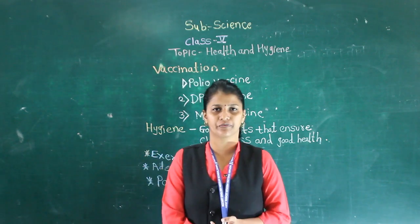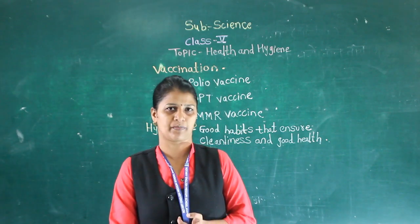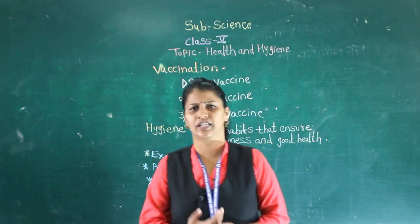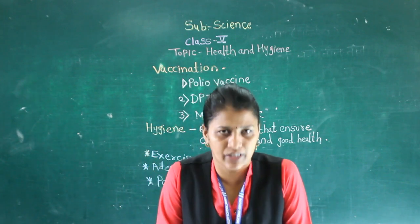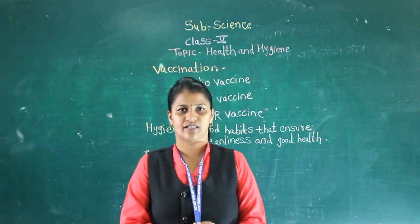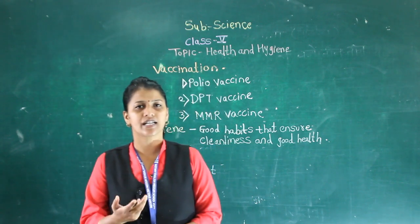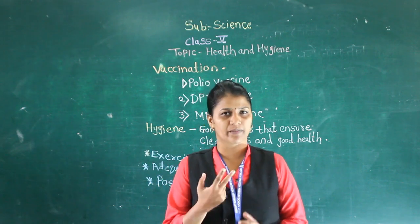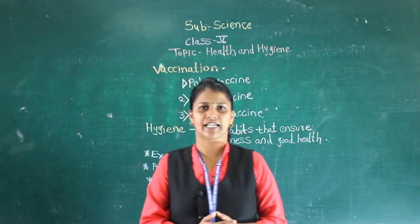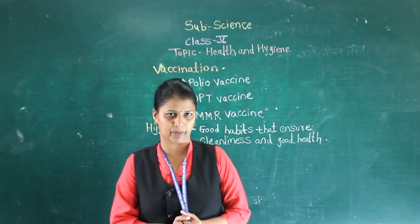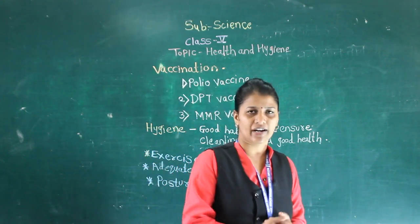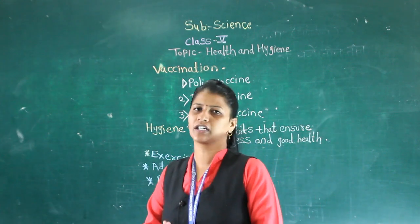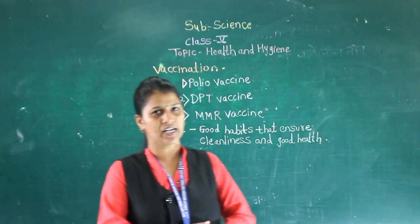We have to wash fruits and vegetables. We should not overcook. There are some methods like salting, steaming, and so on. Then we learned about different diseases. Disease means an unhealthy condition of a person. We learned 2 types of diseases: communicable and non-communicable diseases, and discussed them in detail.